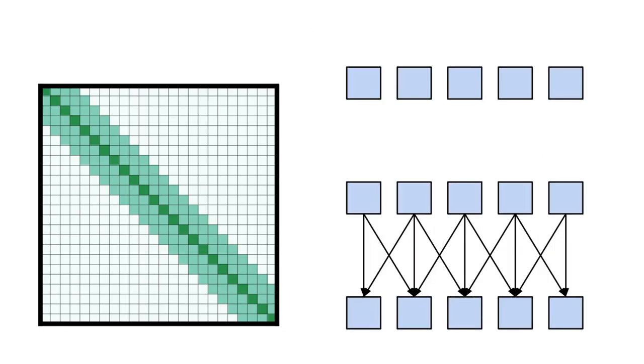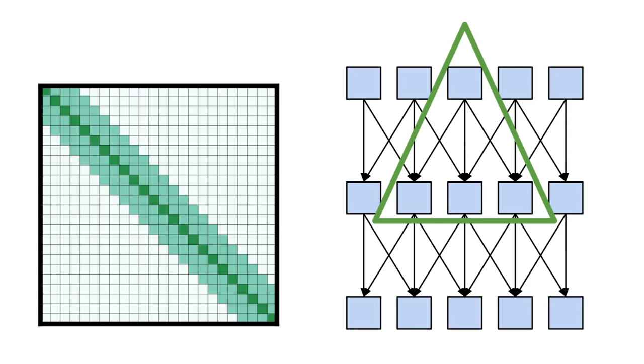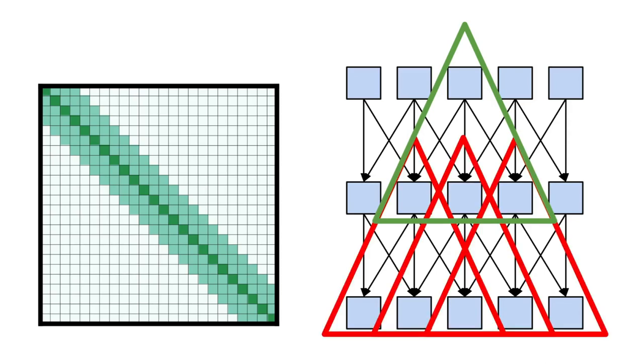Then, as you go deeper into the network, the same mechanism applies. But the tokens you are now attending to also attended to their own in the previous layer, resulting in a wider view in the deeper layers.